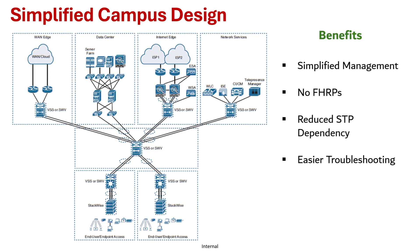Since both links are active, EtherChannel offers sub-second failover, so convergence will be faster. VLANs can span multiple switches without blocking links, so VLANs will be distributed across multiple switches.